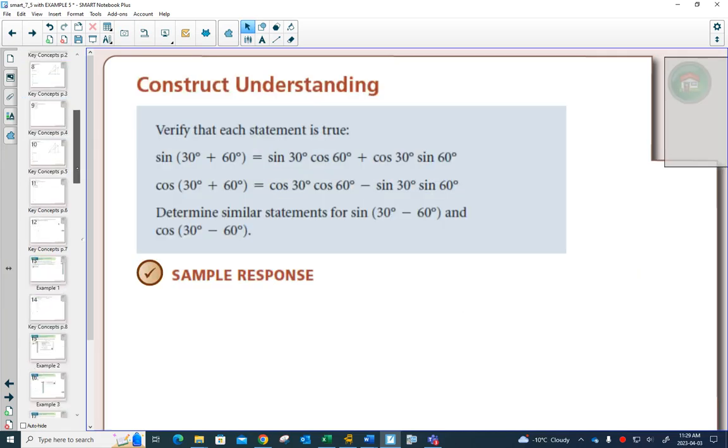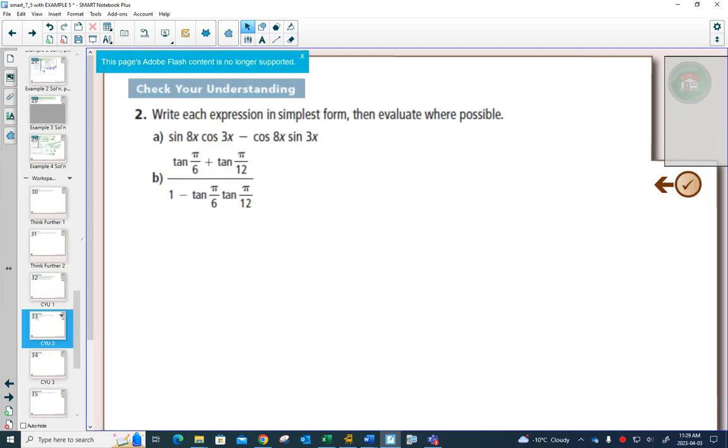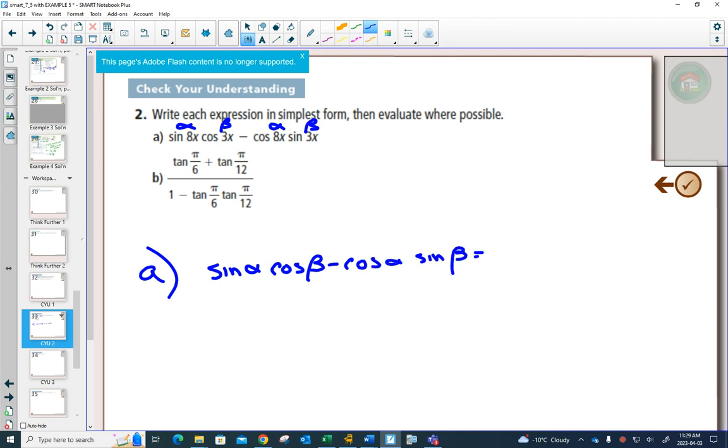And what we're going to do, so for example, in example number two, this question says, write each expression in simplest form, then evaluate where possible. So the first thing you would do is you'd say, hey, I have a whole bunch of sines and coses subtracted here. Is there a formula that matches? So this is my alpha and this is my beta. This would be alpha and this would be beta. Is there a formula that has sine alpha cos beta minus cos alpha sine beta on my formula sheet? So I look on my formula sheet and sure enough, it says this is equal to sine alpha minus beta.